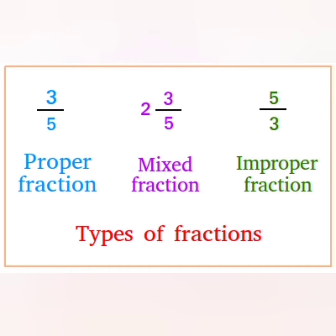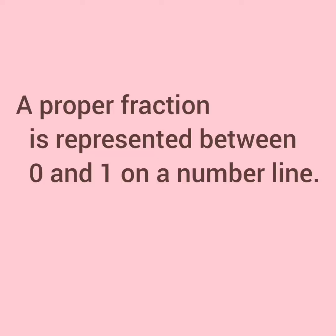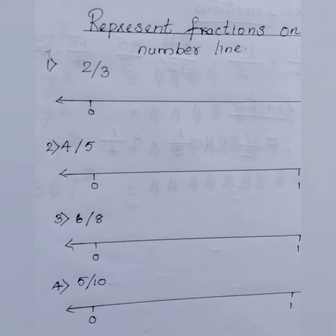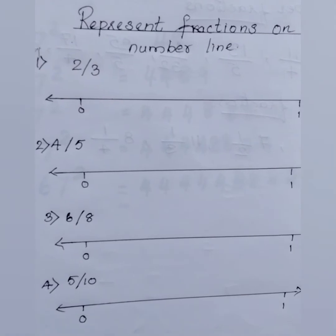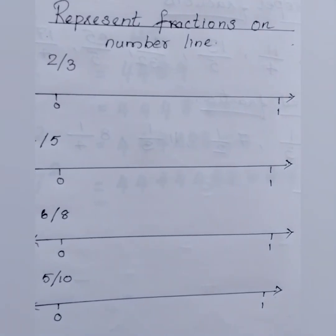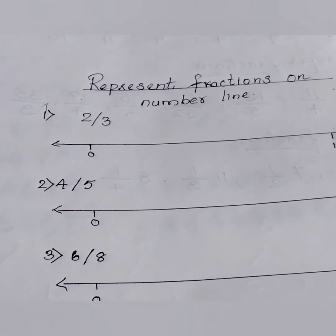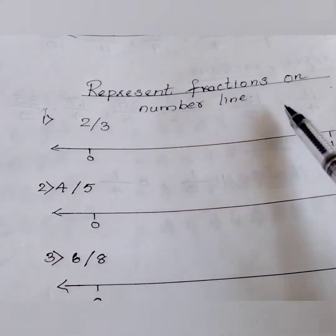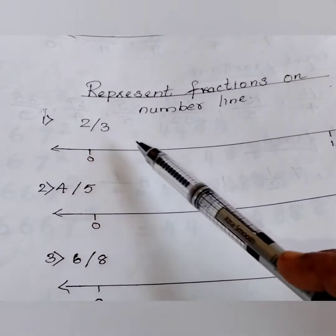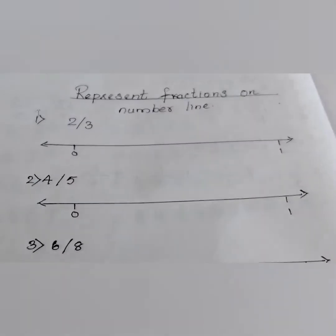First I will show you how to represent a proper fraction on the number line. You should always remember that a proper fraction is represented between 0 and 1 on a number line. We are going to represent the fractions 2/3, 4/5, and 6/8. You can identify that they are proper fractions as the denominator is bigger than the numerator.